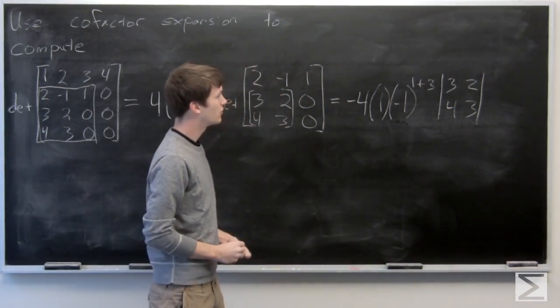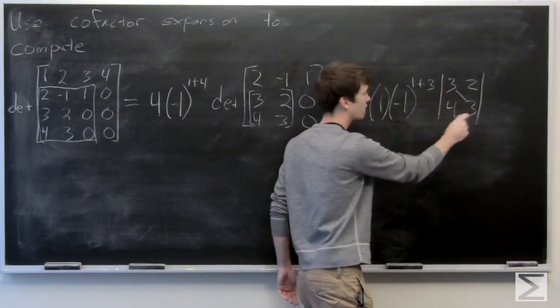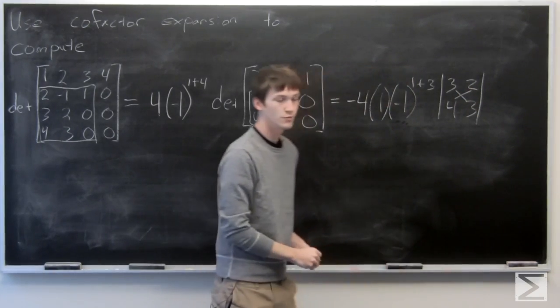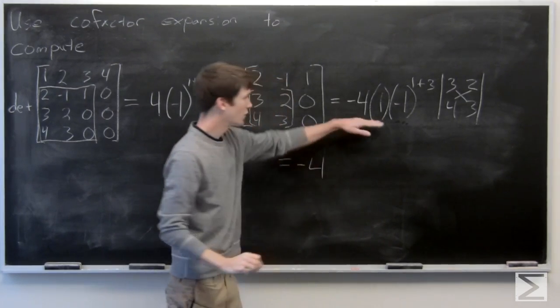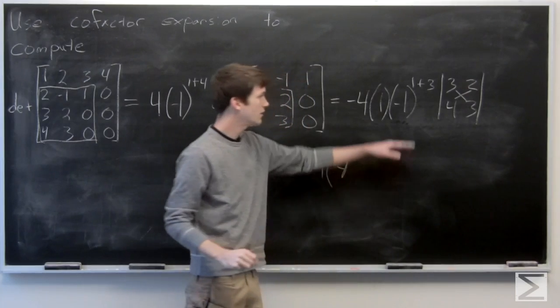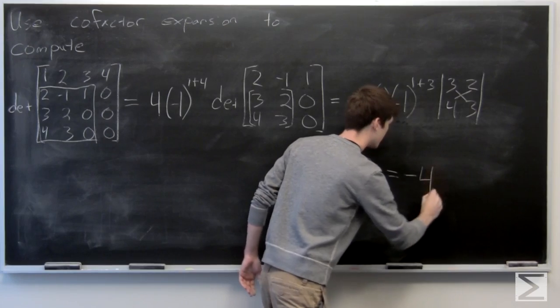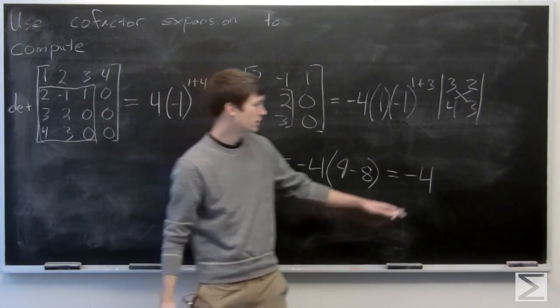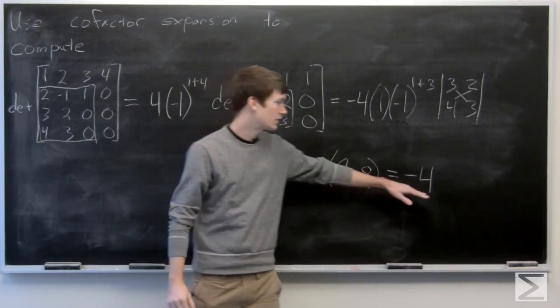And we know how to compute the determinant of a 2 by 2 matrix. We have 3 times 3 minus 4 times 2. So our determinant simplifies to negative 4 from before times 9 minus 8, which equals negative 4. So our determinant using cofactor expansion of our 4 by 4 matrix is just negative 4.